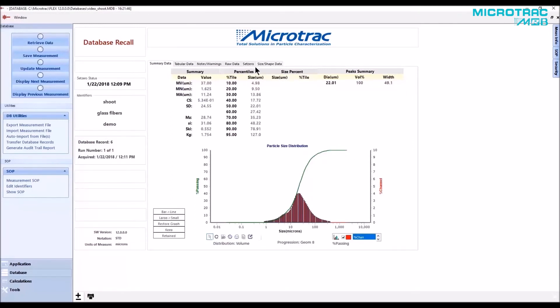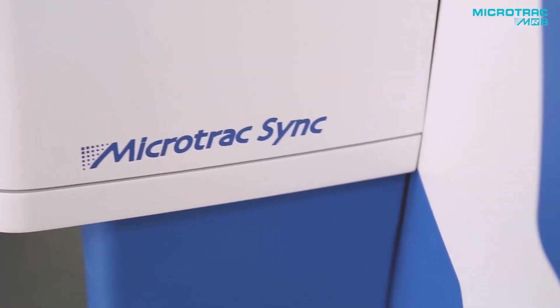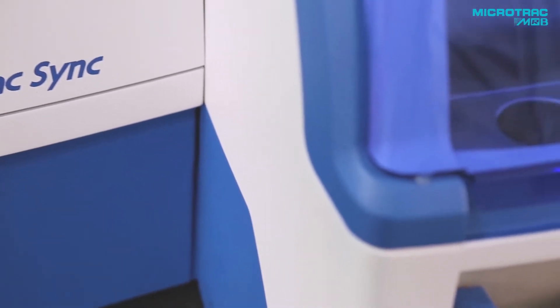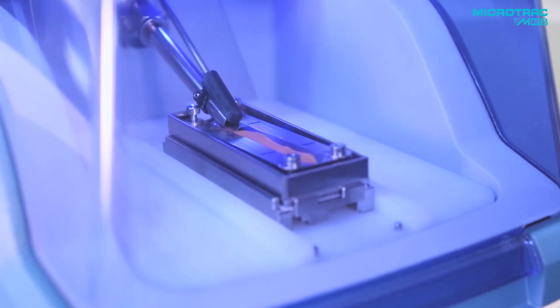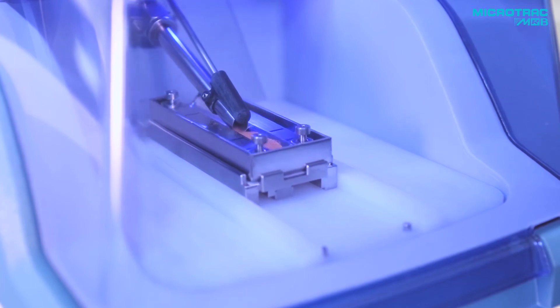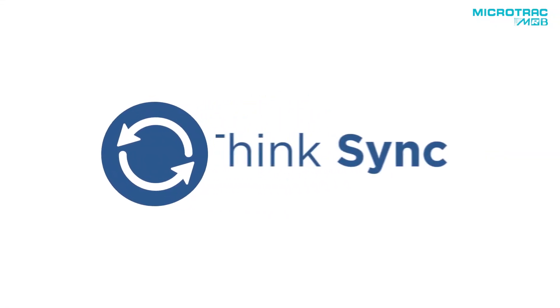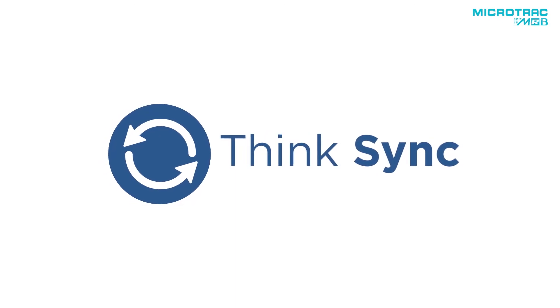Up until now, laser diffraction has provided the industry with the most used and most reliable methodology for particle size. Users who wanted more information, like shape, needed to perform measurements on different technologies. The Microtrack sync has changed that. The industry's most reliable size measurement is now combined with the most sophisticated shape information in a single instrument. Whether your sample is wet or dry, big or small, regular or irregular, think Sync.